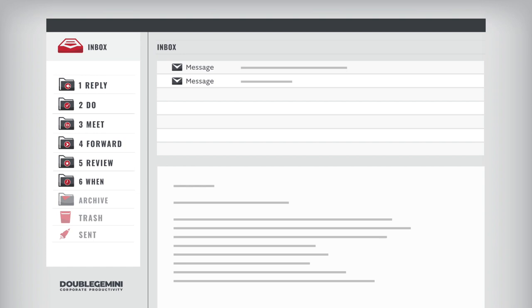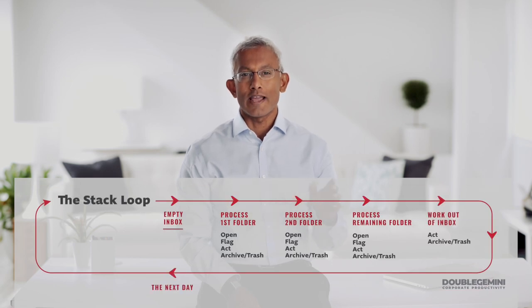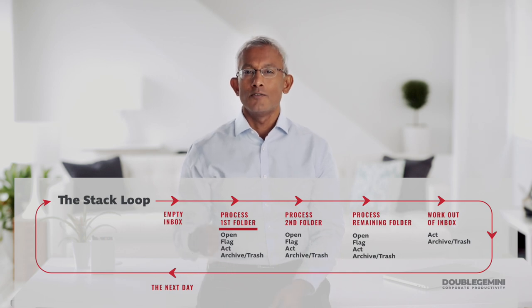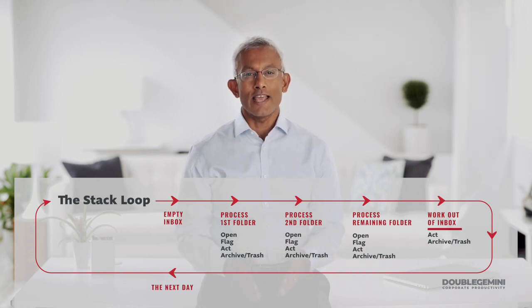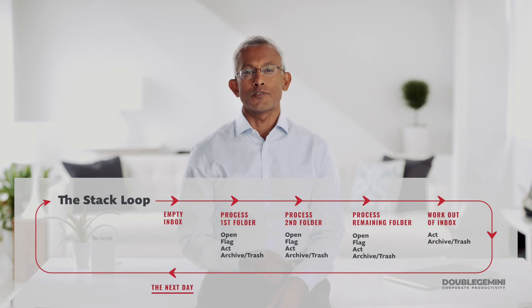The next day, I'll get in, take any new emails, empty them from my inbox into my action folders, and then repeat the process. You should now have a clear understanding: start by emptying your inbox, then process each folder by opening it, flagging the emails you're going to act on, acting on them, and archiving or trashing them. Repeat for each folder, then work out of your inbox for the rest of the day. Then start the process all over again the next day. Pay attention to what it feels like to have an empty inbox and what it feels like to have closure on your email — it's critical to emotionally acknowledge these points in time because they are two of the biggest rewards of stacking and they're often underappreciated.